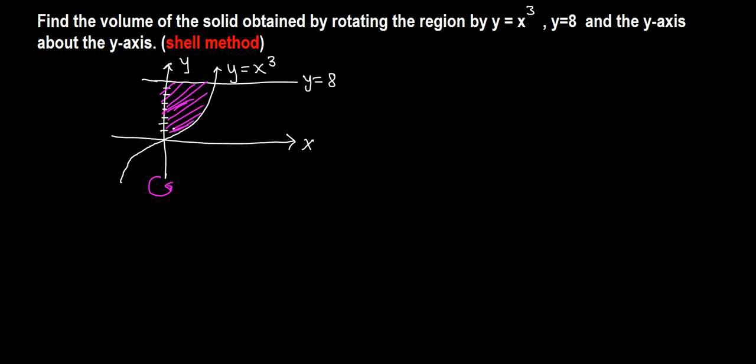Whenever we use the shell method, we have to take the representative rectangle parallel to the axis of rotation. We need to take a small rectangle with a small width on the x-axis, that width will be delta x. The width suggests the volume formula will be in terms of x, which means the curve should be written as y as a function of x, which is already the case.